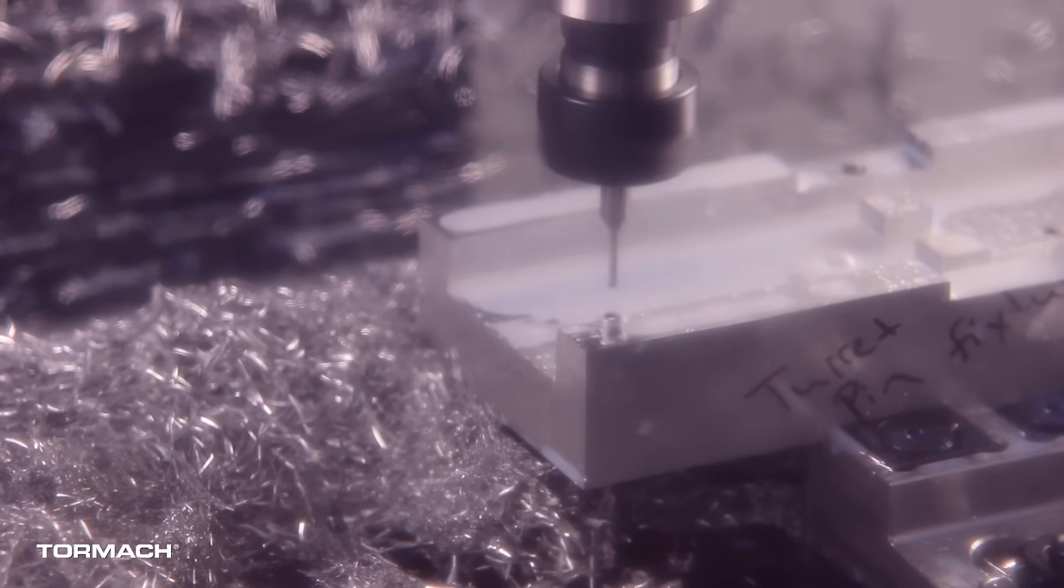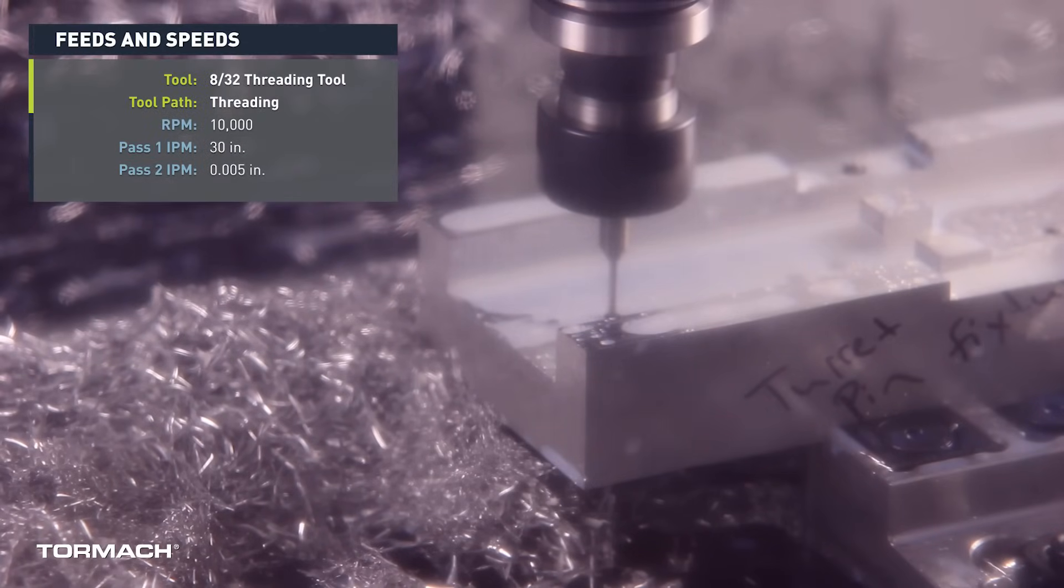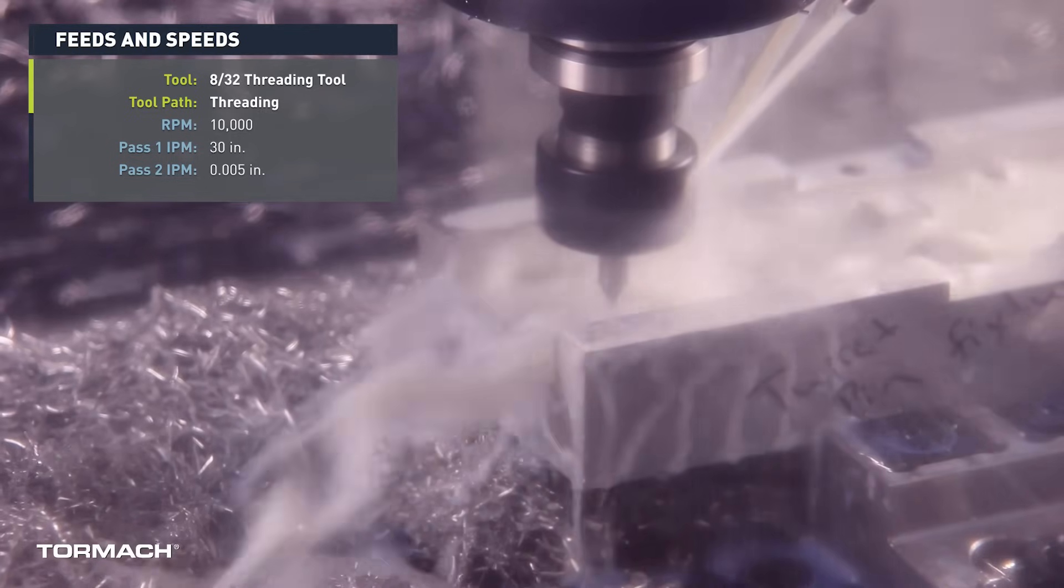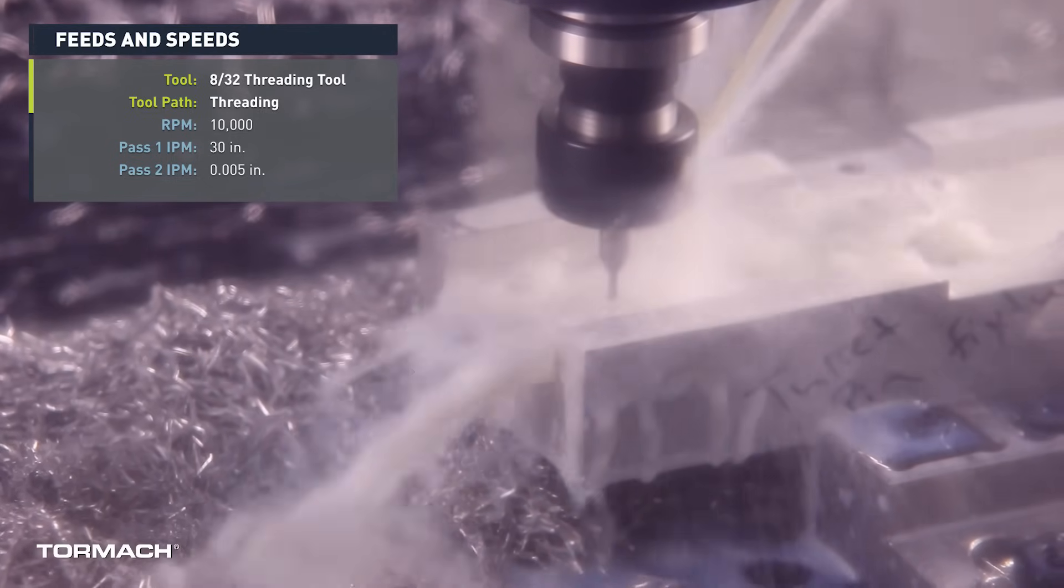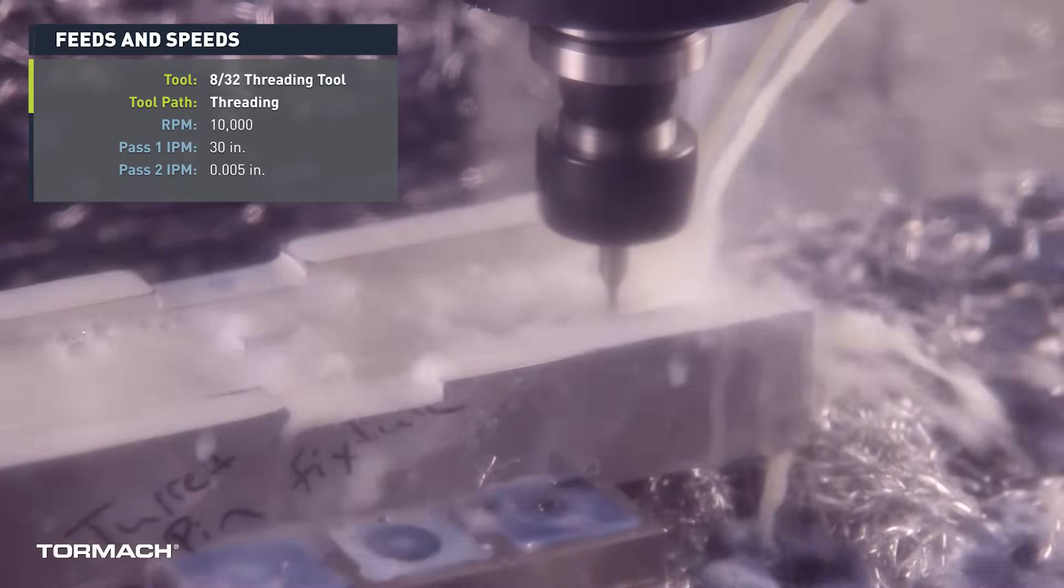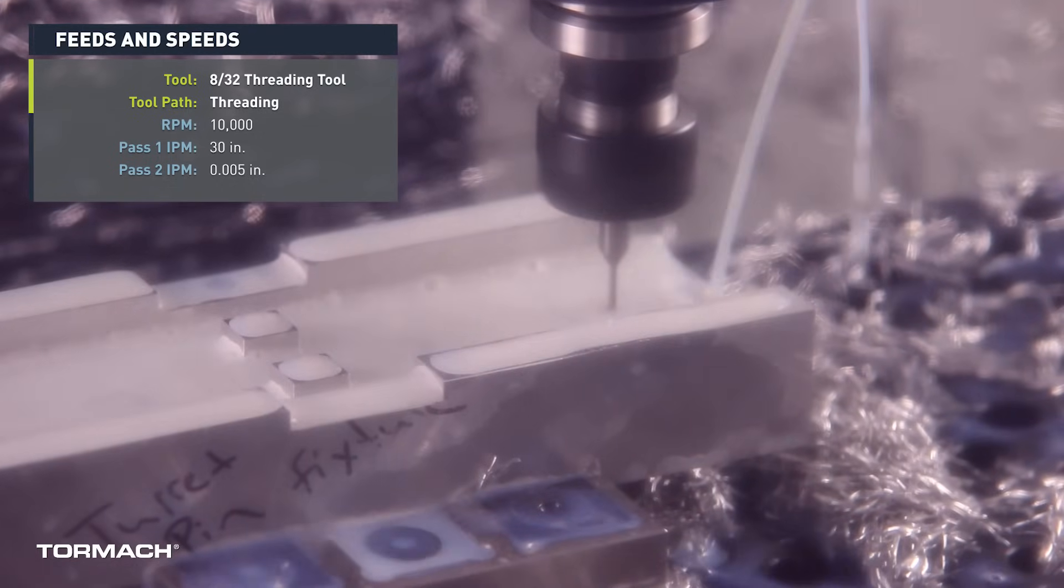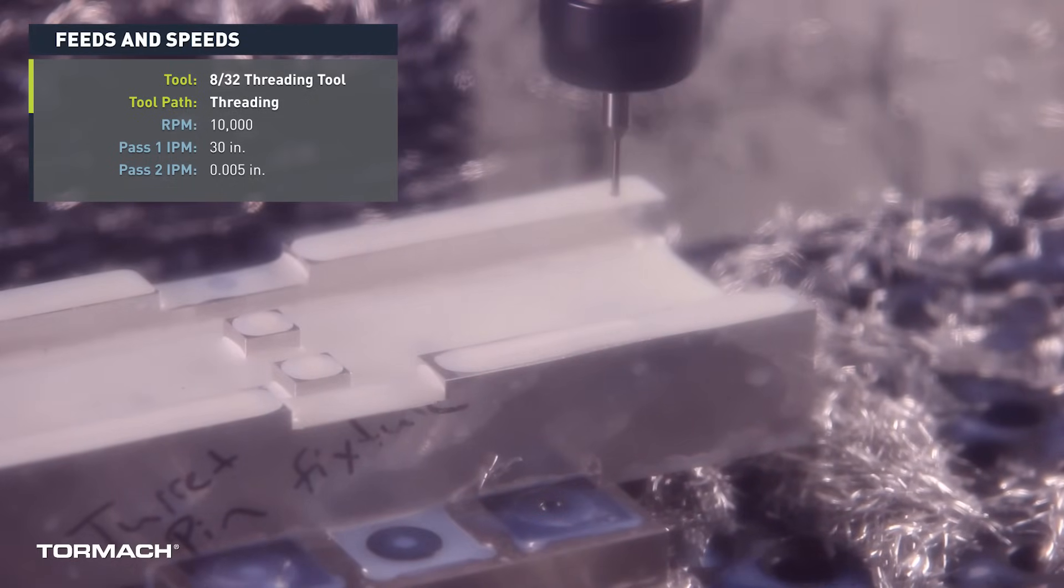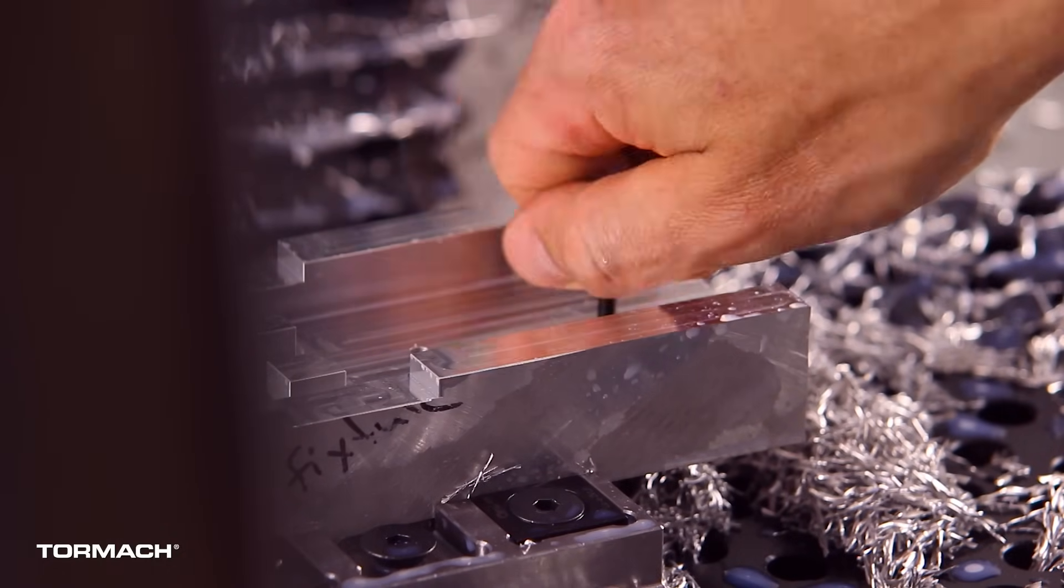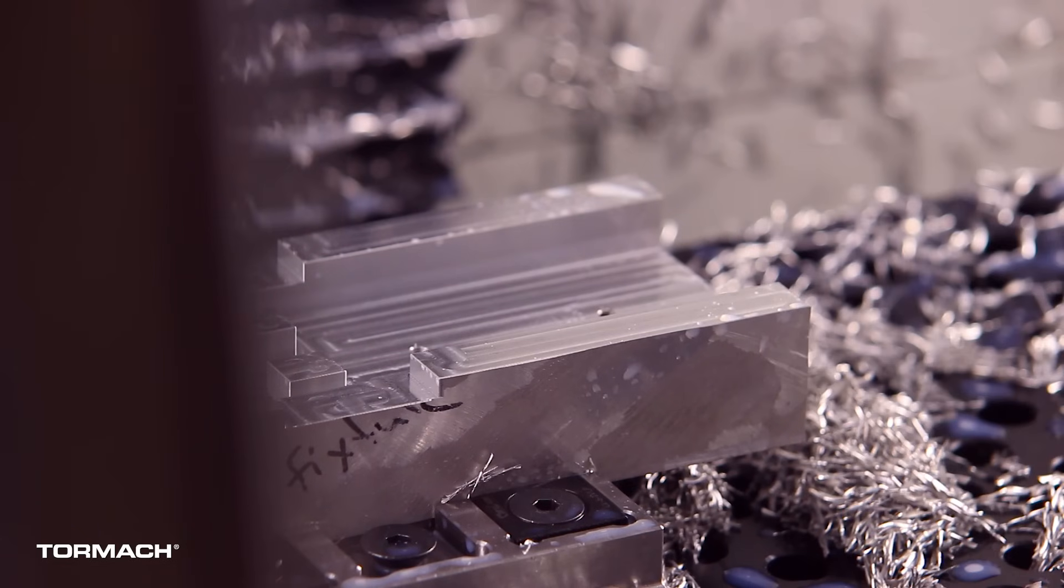The last tool path we had to run was the thread milling for the 8-32 holes. We ran the thread mill at 10,000 RPM at 30 inches a minute, and we did this in two passes. The second pass was a real light pass at five thousandths of an inch, just to take a nice light finish pass and get a good fit on the threads. I was pretty lucky on this one. I didn't have to do any cutter compensation or anything to get the threads to fit nice. It just worked beautifully right out of the gate for us.